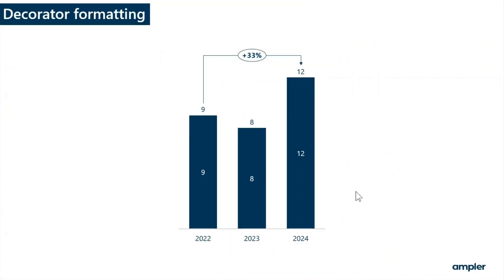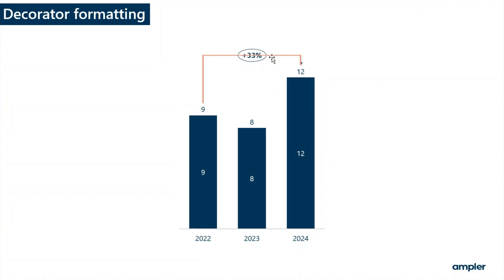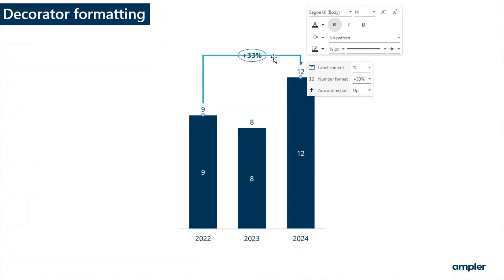Most decorators include a line and a label. Both can be formatted to match the desired look. To change the formatting, select the line or the label and the format menu appears.